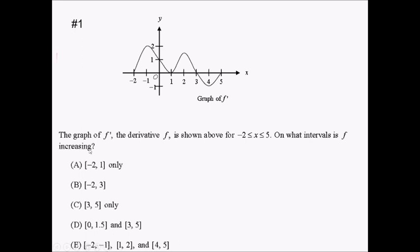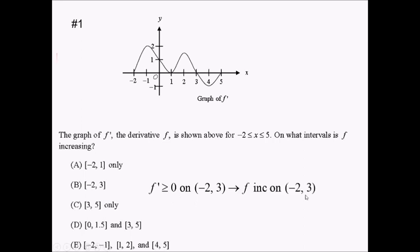f is going to be increasing where f prime is positive. Looking at our graph, f prime is positive between negative 2 and 3, or at least it's non-negative on this interval. You might say it's from negative 2 to 1 and then from 1 to 3, but I'm just going to say from negative 2 to 3 because we can include places where it's defined on intervals of positivity. So we'll say negative 2 to 3, greater than or equal to 0. Therefore, f is increasing on the interval from negative 2 to 3.